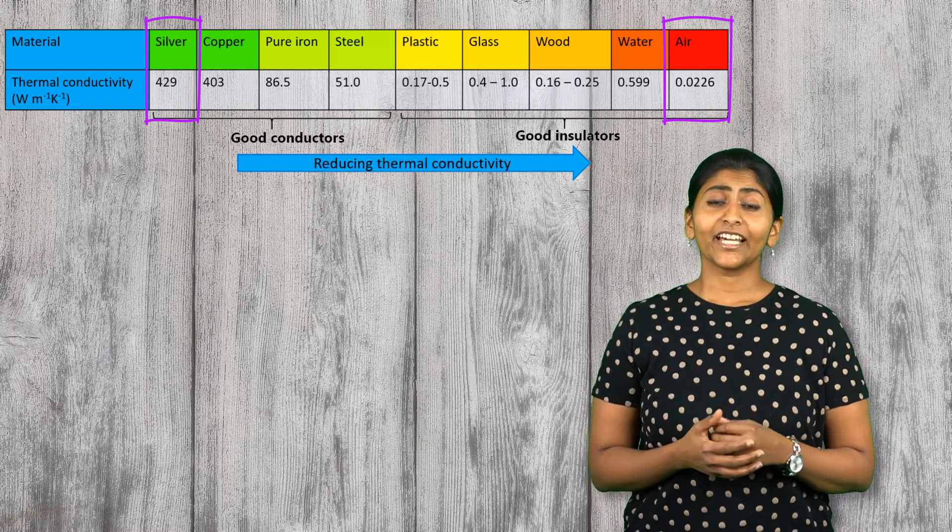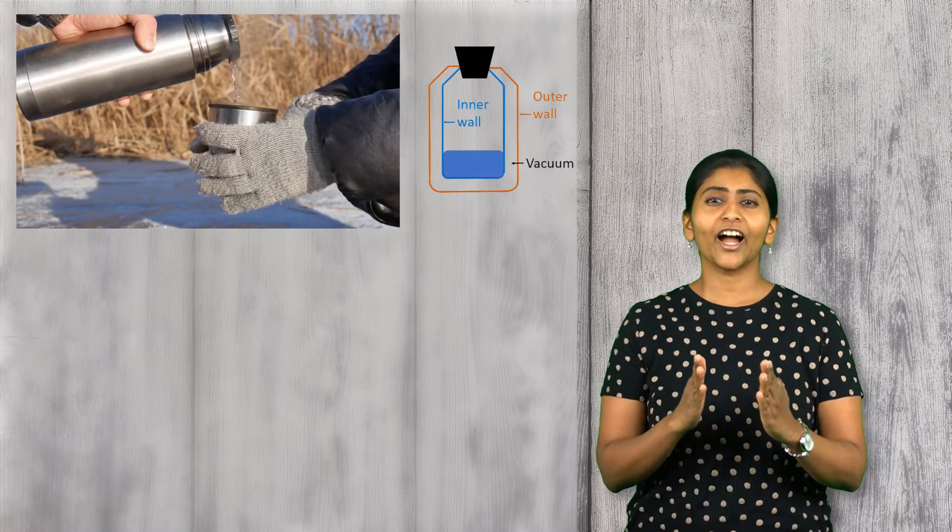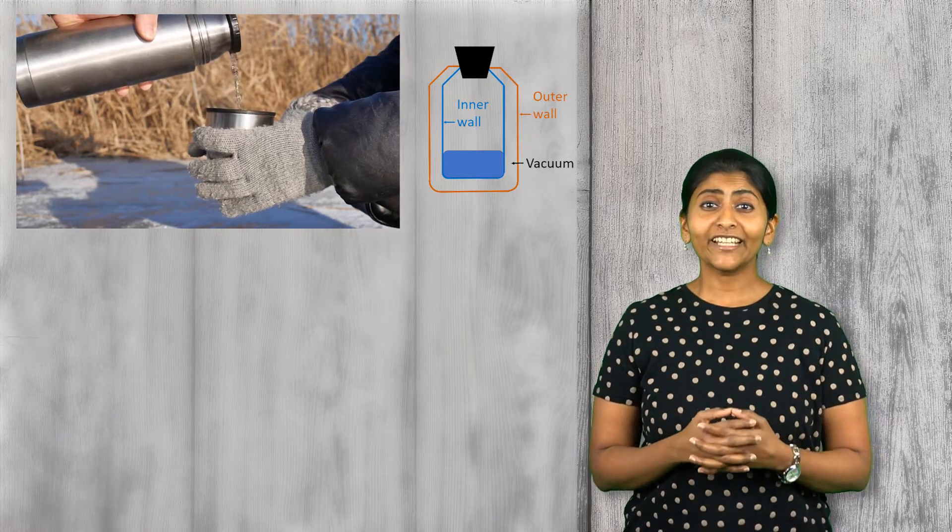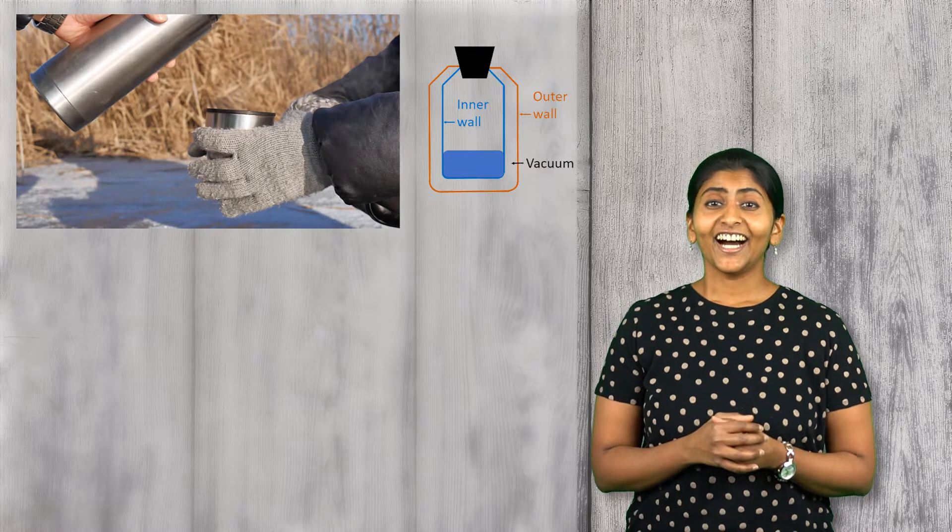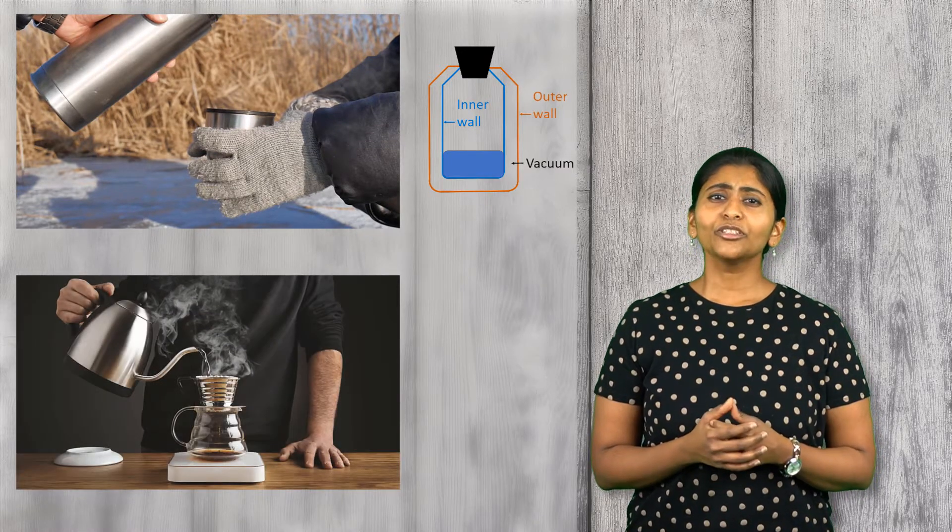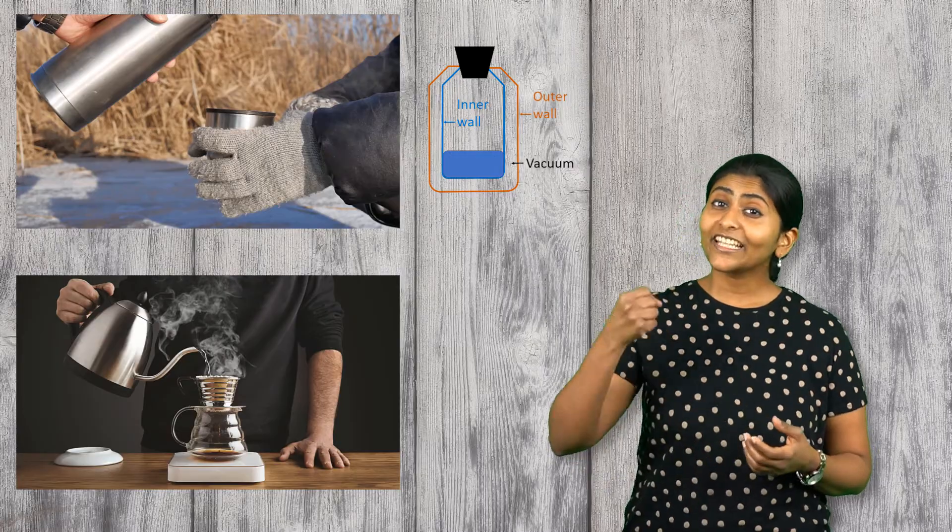Thermal conductivity is an important factor that engineers have to consider while designing a wide range of products. While designing thermal products, it is common to use a combination of materials with very different thermal conductivities. For example, in order to maintain the hot temperature of liquids, thermos flasks are designed to have two walls with a vacuum in between them. This vacuum prevents heat loss through conduction, thus preserving the heat of the liquid inside. Another example is the kettle. Although the body of a kettle might be made of metal, its handle is made of plastic so that we can safely pick it up.